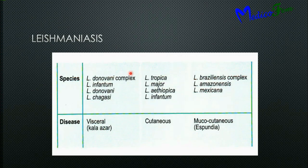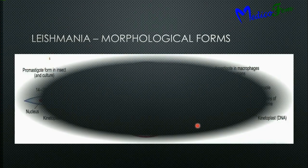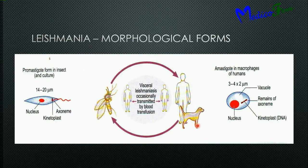These are the different species of leishmaniasis. Leishmania donovani complex causes visceral leishmaniasis or Kala-azar. Leishmania tropica and Leishmania major cause cutaneous leishmaniasis. Leishmania braziliensis complex and Leishmania mexicana cause mucocutaneous leishmaniasis.